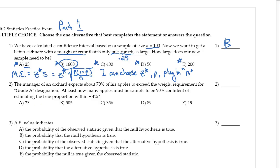A manager of an orchard expects about 70% of his apples to exceed the weight requirement for the grade A designation. So this 70% is like my P, my P is expected to be 0.7. At least how many apples must be sampled to be 90% confident of estimating the true proportion? So 90% confident is going to go with a z star of 1.64. This is on a table that I'll give you. So I want my margin of error to be equal to 4%, 0.04. I want a 4% margin of error.